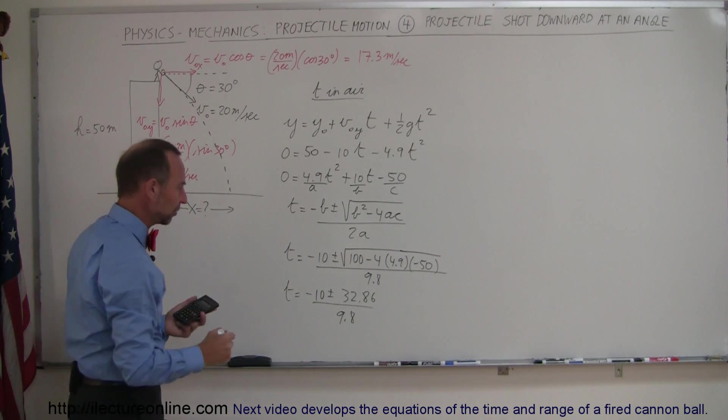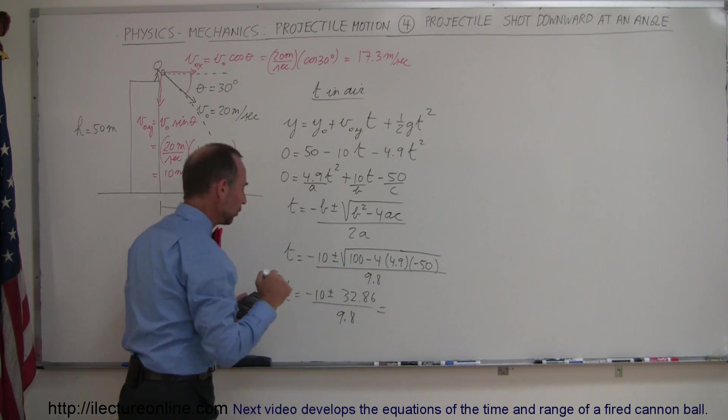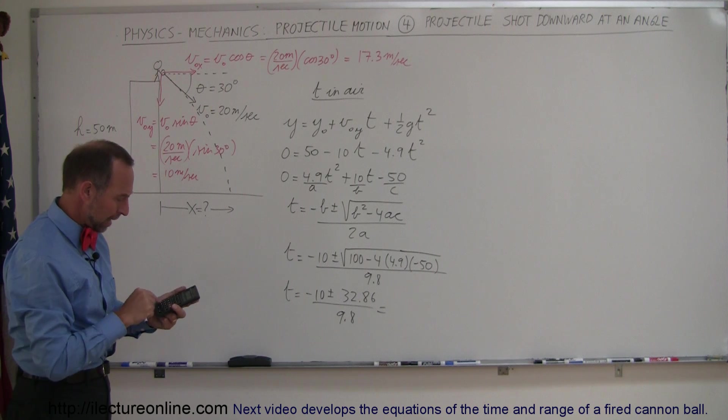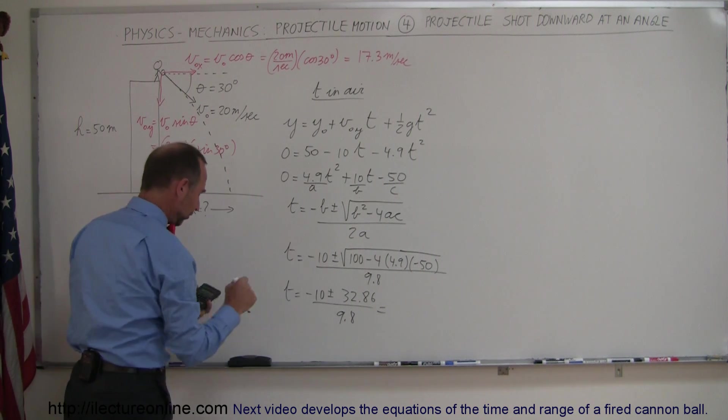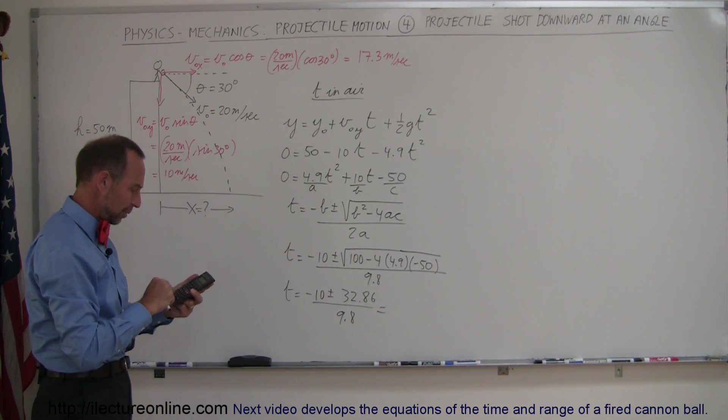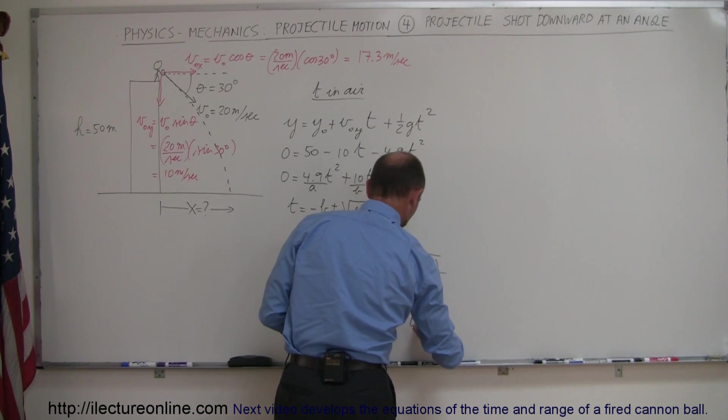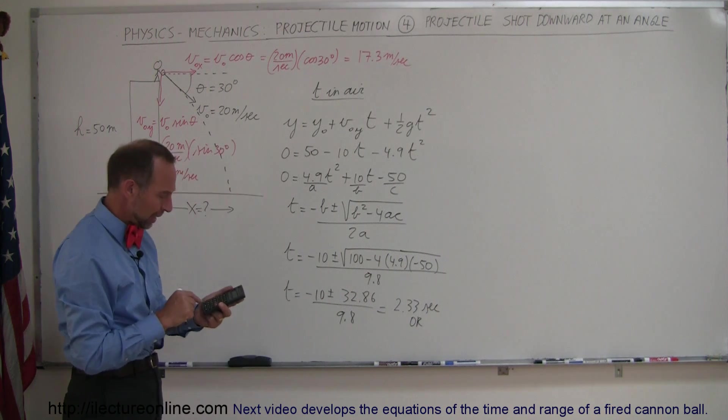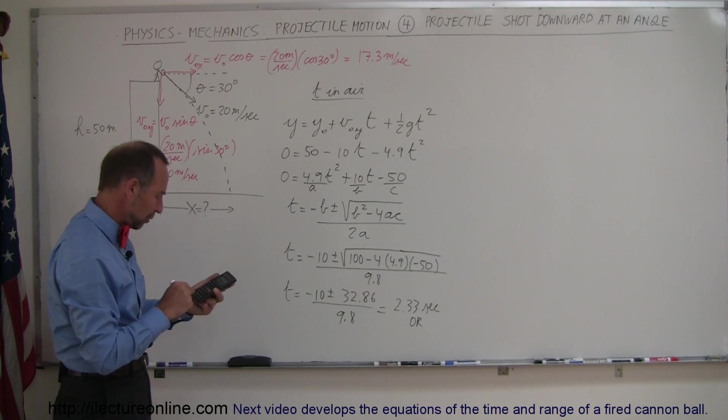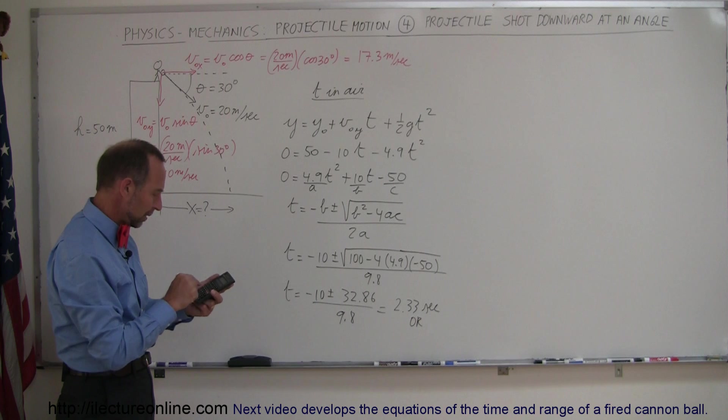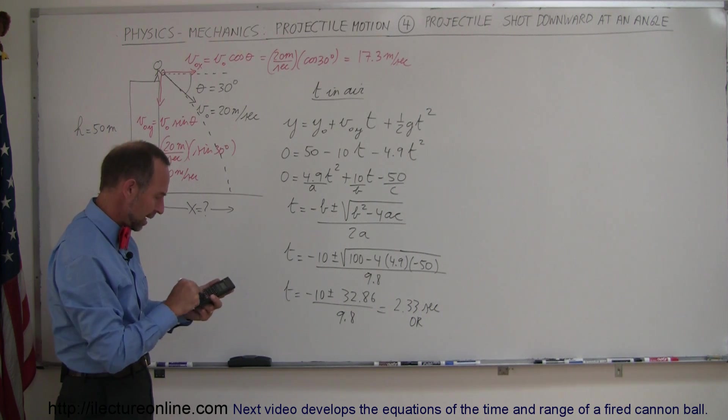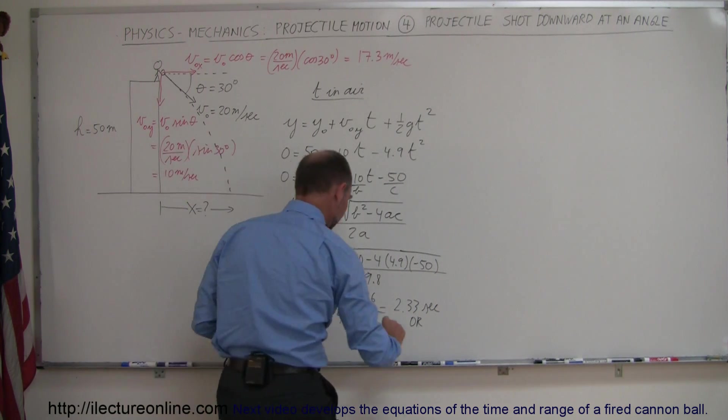So now when we plug these numbers in, using the positive value here first and divide that by 9.8, we get an answer of 2.33 seconds. Or if we use the negative possibility, we get minus 10 minus 32.86, that's 42.86 divided by 9.8, so we get minus 4.37.